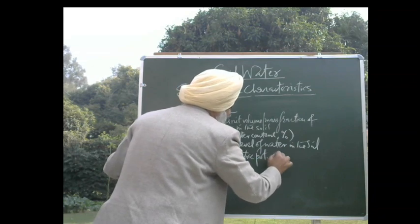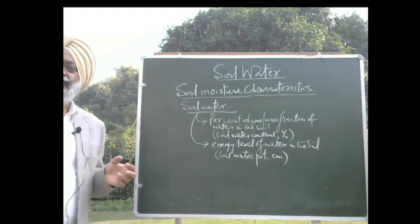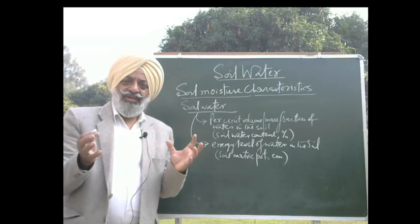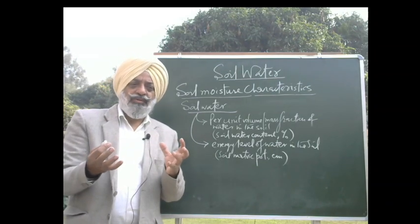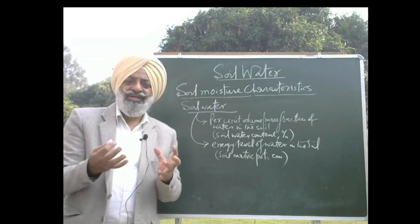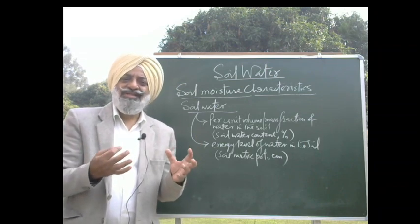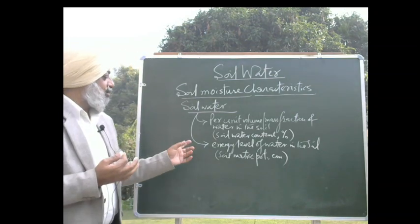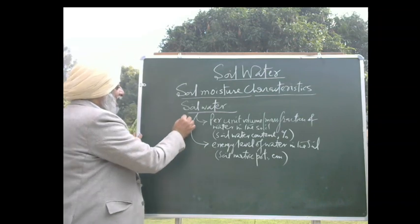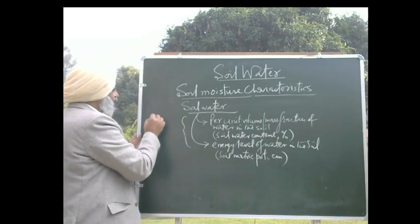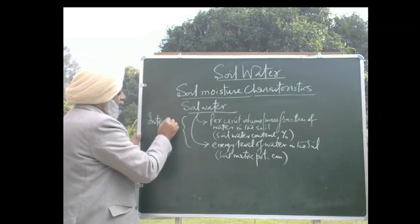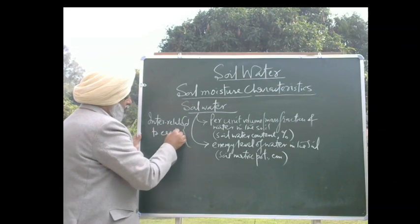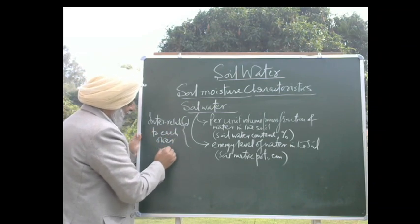Soil matric potential is generally expressed in units of centimeters. Water in the soil can be expressed in two ways: one is the amount of water present in the soil, and the second is the force — the tenacity — with which this water is held in the soil, called soil matric potential. These two are very much interrelated to each other.